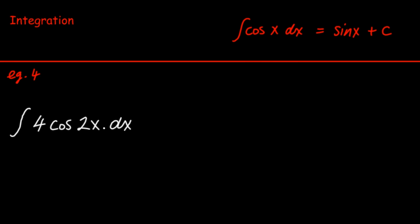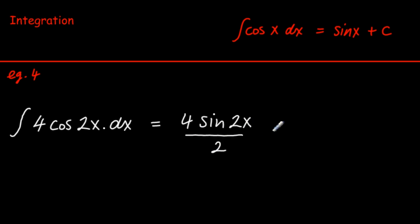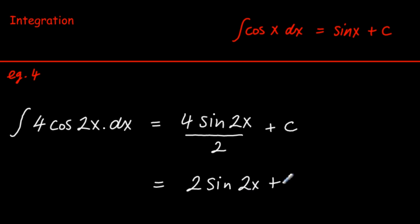It's important to learn this example. The integral of cos x dx is sin x + C. So for the integral of cos 2x, we should learn this off: it becomes 4 sin 2x divided by 2 — dividing by the multiplier of the angle — and we add on the constant of integration, which neatens up to 2 sin 2x + C.